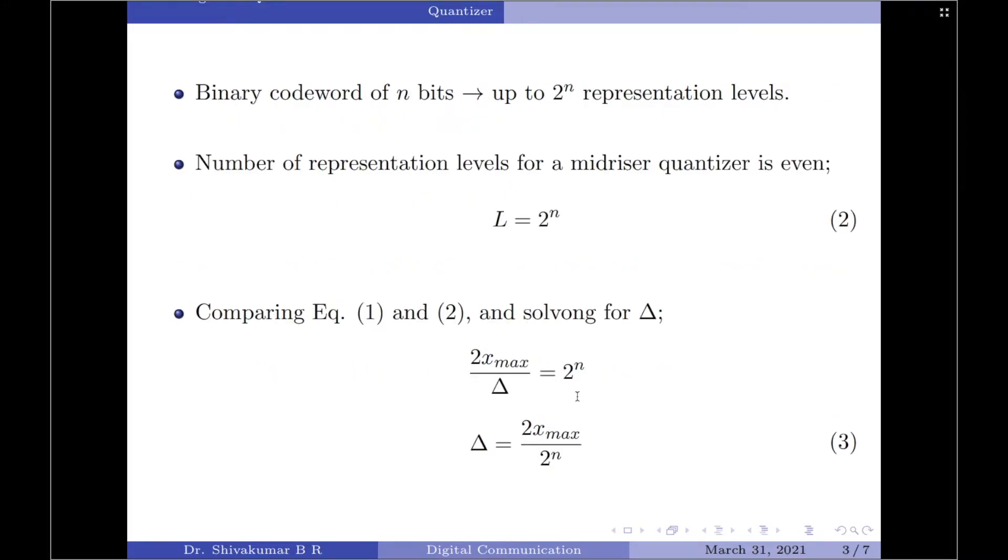we can have up to 2^n representation levels. Since we have considered here a mid-riser quantizer and the number of representation levels for a mid-riser quantizer are even, we can once again write an expression for the number of representation levels as L equals 2^n. So, we have now expressed the number of representation levels of a mid-riser quantizer in 2 different terms.